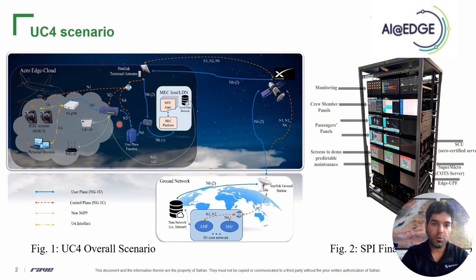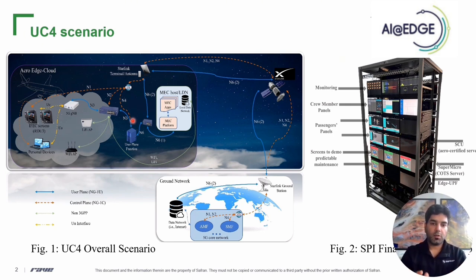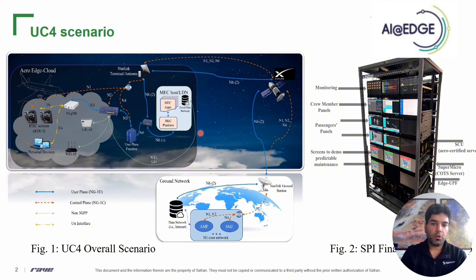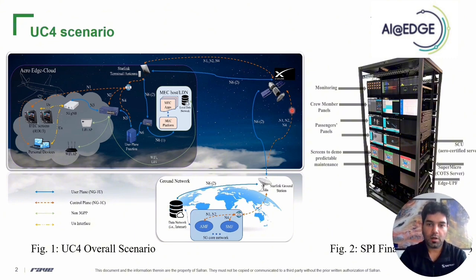This is an overall scenario in which we have three segments: the aviation sector, the space sector, and the ground networks. The aviation sector is the main part of Use Case 4, where we set up our test rack with IFEC — or in-flight entertainment and connectivity screens — as well as commercial UEs connected to 5G networks. We also have Li-Fi and Wi-Fi connectivity. We built the Aero Edge Cloud with a MEC host managed by Kubernetes and a local data network, while users wanting Internet access connect through commercial Starlink satellites.